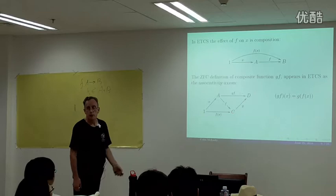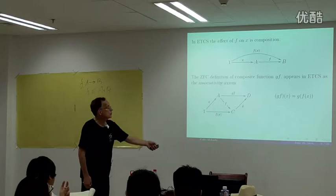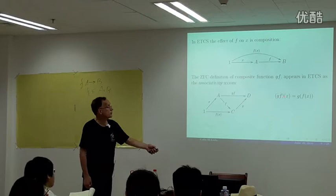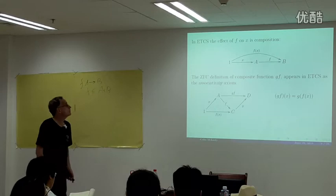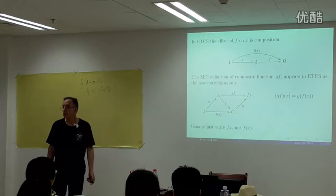One of our axioms was that no matter what arrows you have, composing three of them doesn't depend on which way you group them. In textbooks this is often offered as a definition of the composite; for us it's an axiom. I'll usually omit parentheses and add them only when I think they make things easier to read.